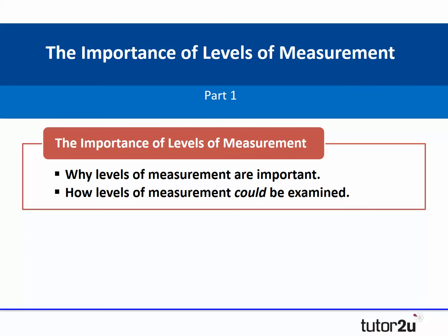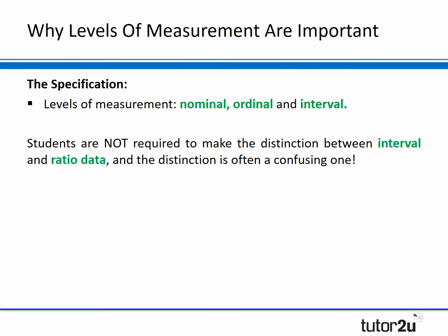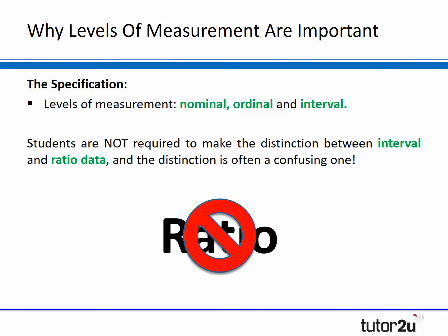Let's make a start by looking at the importance of levels of measurement, just to set the context for this webinar. In terms of the specification, it simply lists levels of measurement: nominal, ordinal, and interval. It's important to note that students are not required to make the distinction between interval and ratio data, and often this distinction is a confusing one. My personal advice is to avoid teaching ratio data - stick with the three: nominal, ordinal, and interval.